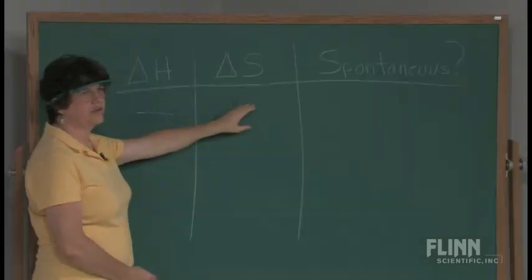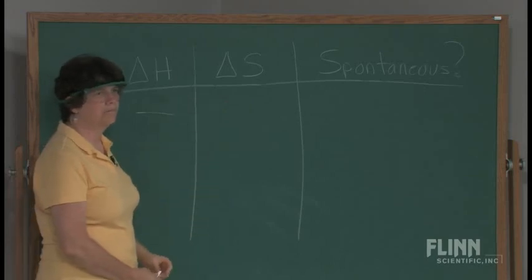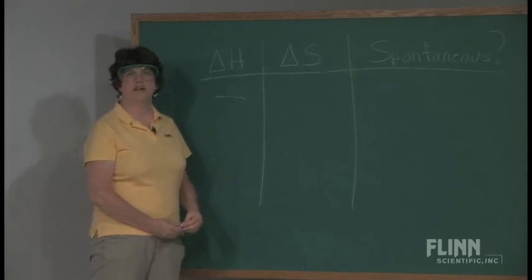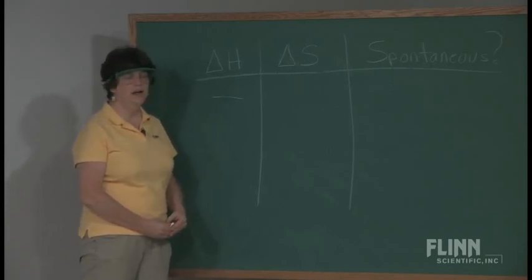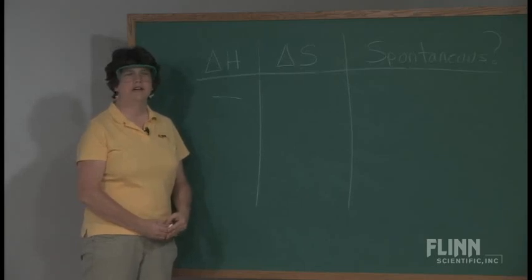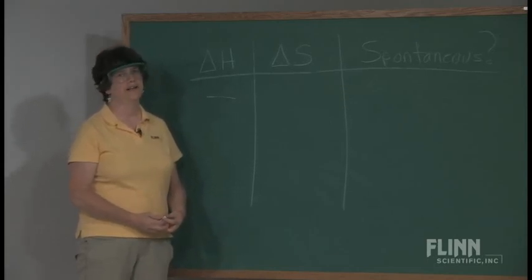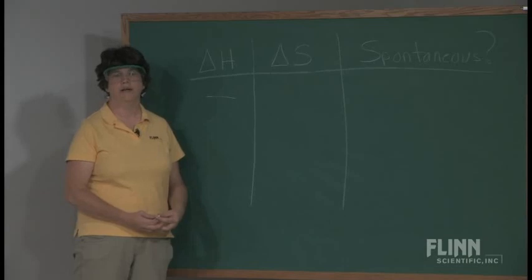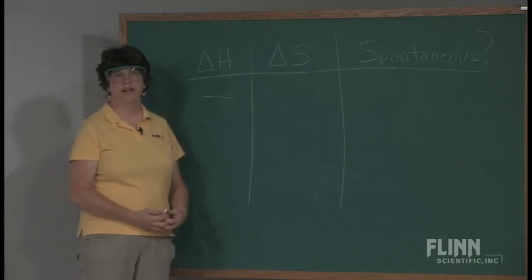We also look at delta S, or entropy. Depending on your students' level, you may not want to introduce that symbol because it can frighten people away. One word we use in its place is disorder. Things tend to be disorderly rather than orderly. I often use my desk as an example: how many ways can a teacher's desk be in perfect order? One. How many ways can it be in disorder? Infinite. So disorder is more likely.